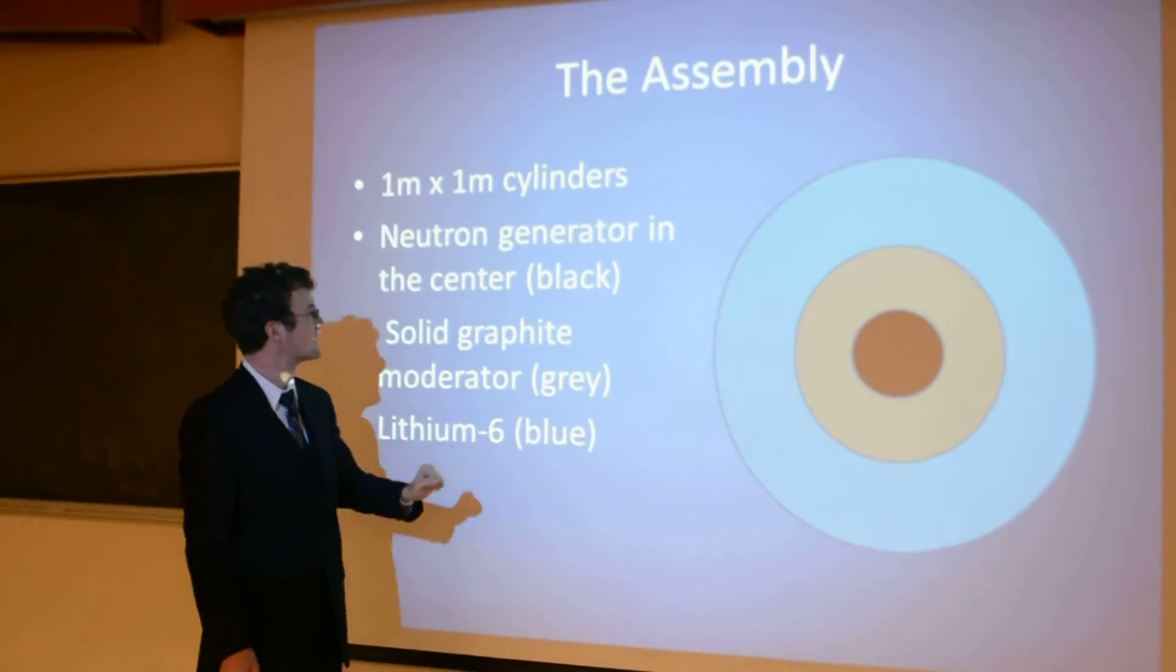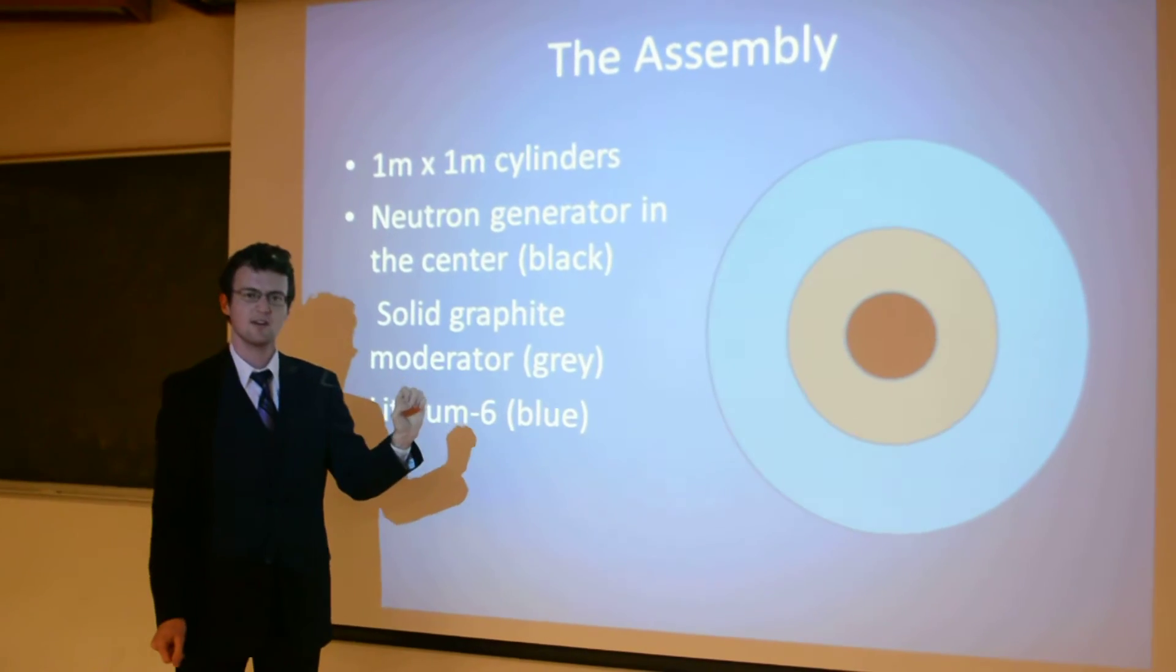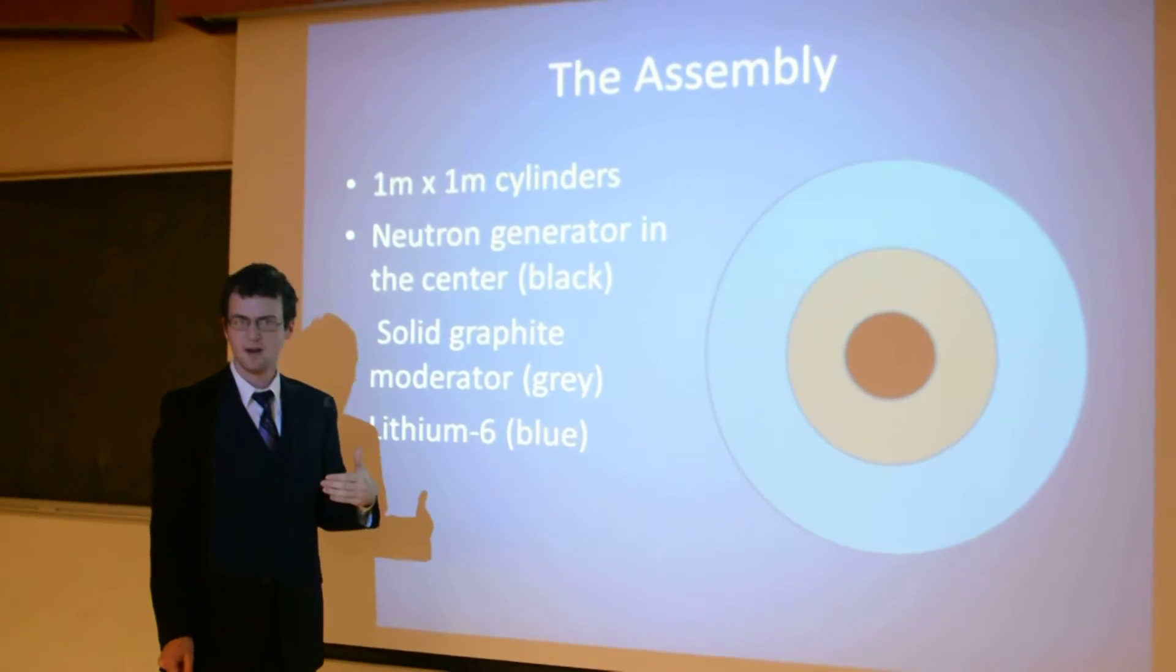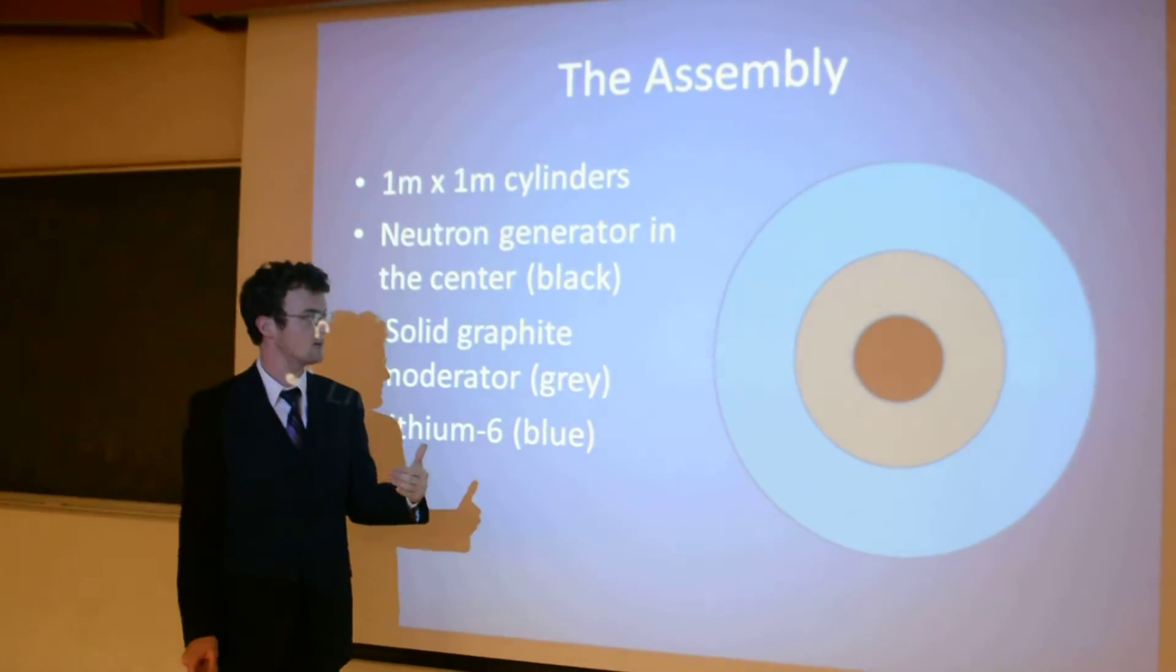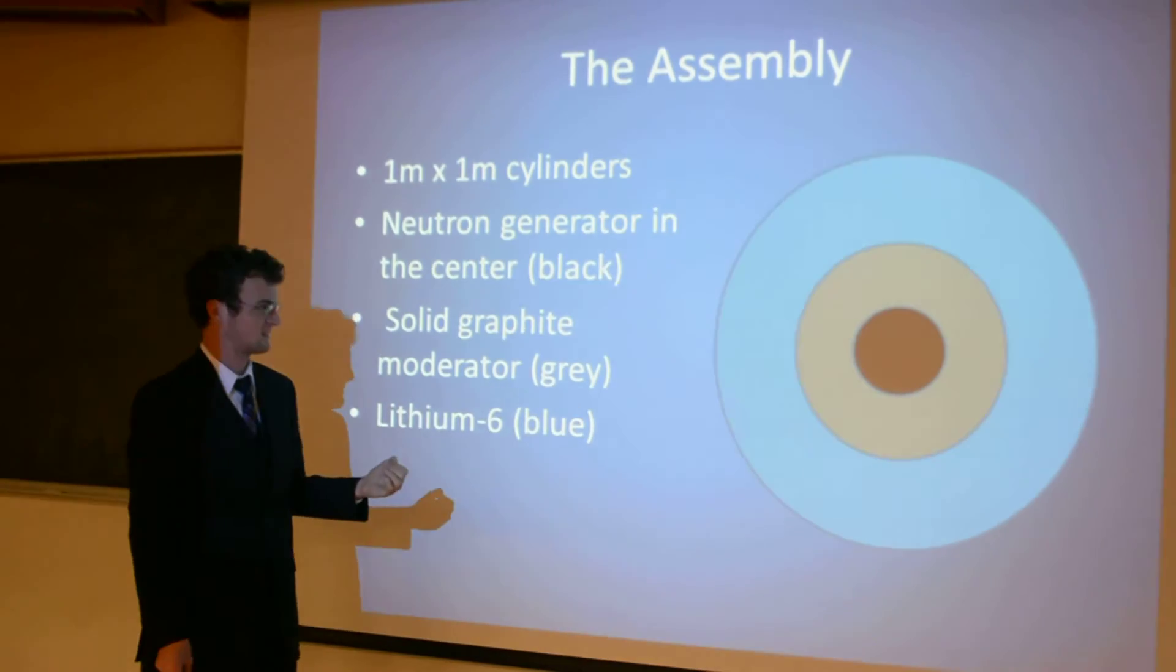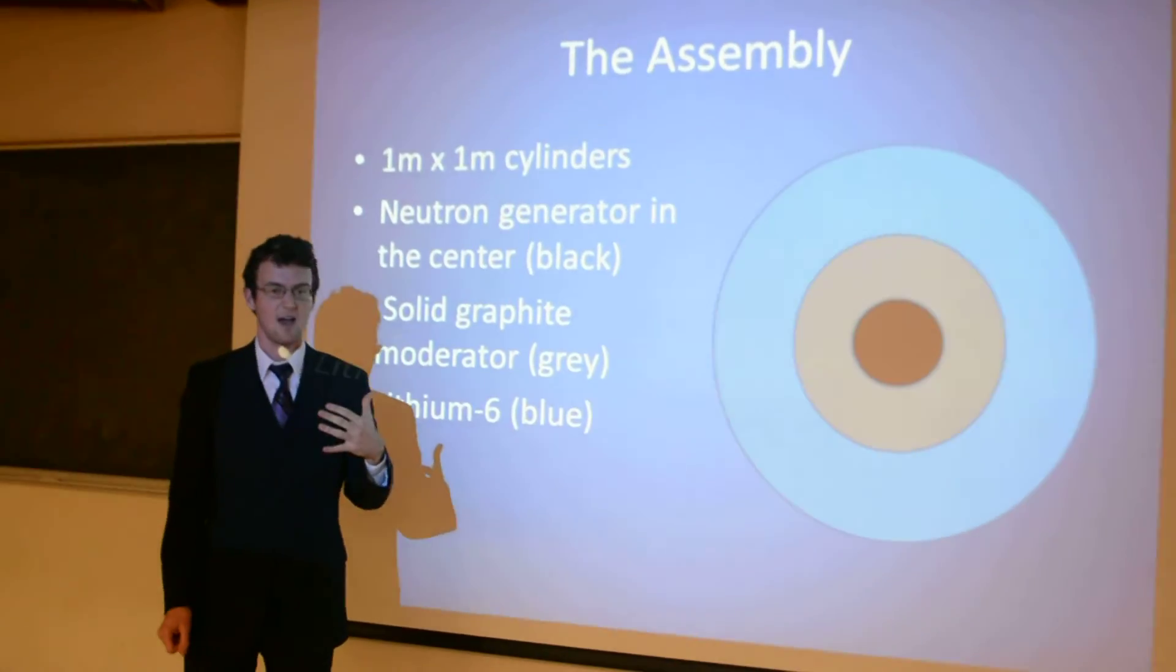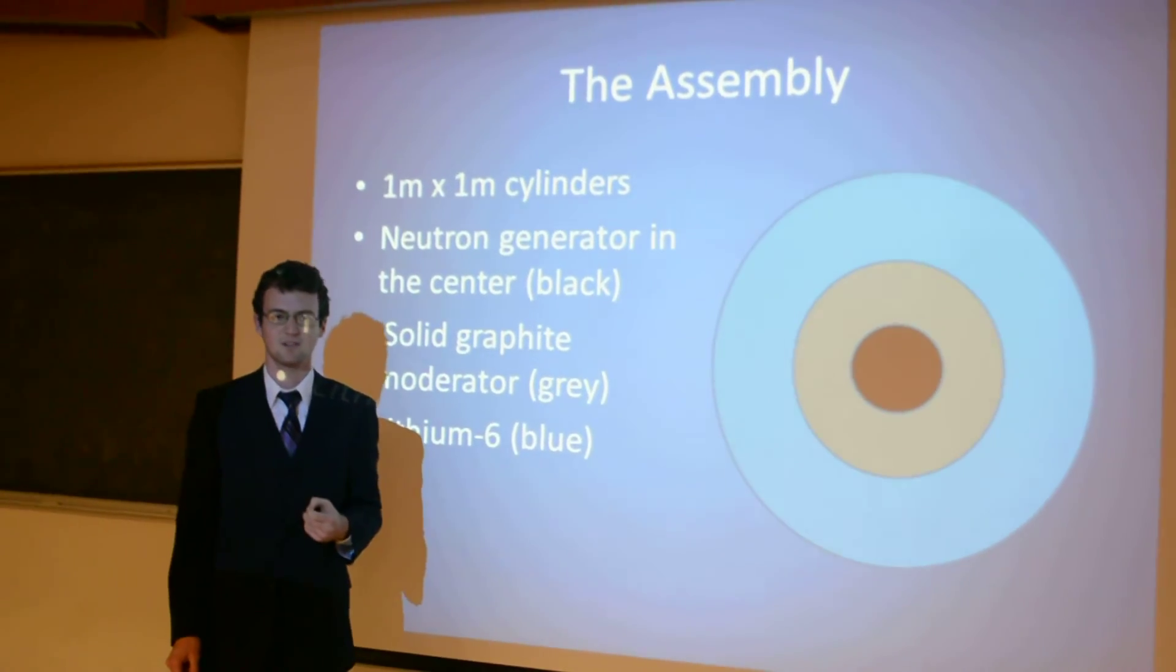And this is the assembly that can do it. It is a 1 meter by 1 meter cylinder with a neutron generator in the center, surrounded by first a solid graphite moderator, and then a blanket of lithium-6. And that, this assembly, and the rest of its implications are the main focus of this presentation.